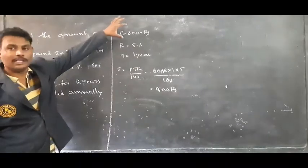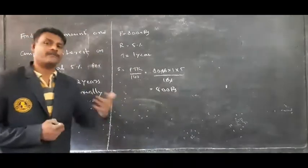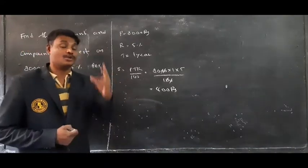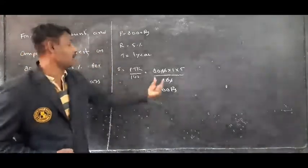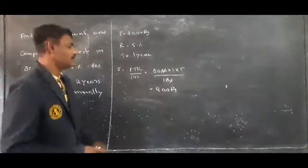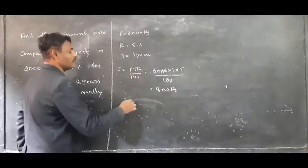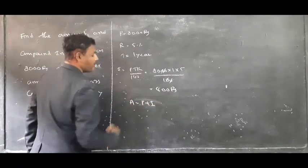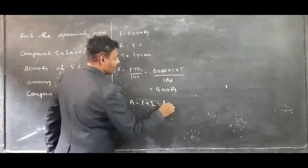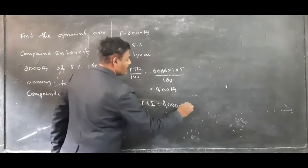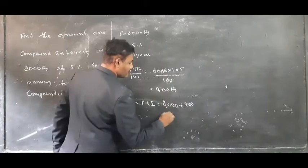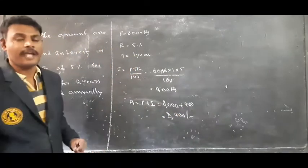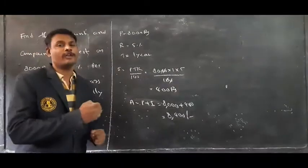Here the principal amount is 8000, rate of interest is 5%, and interest is compounded annually. For the first year, the interest is 400 rupees. Then the total amount after the first year: A is equal to P plus I, which is 8000 plus 400, equals 8400 rupees. So after one year he has to pay 8400 rupees.